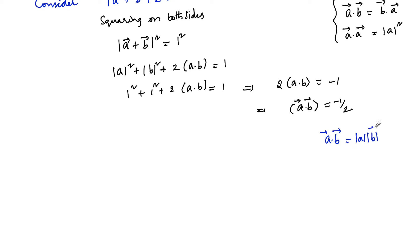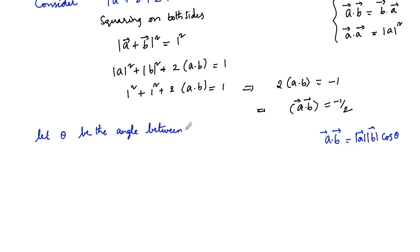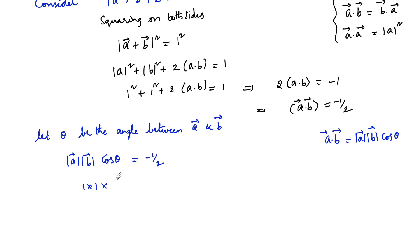Now, a dot b is equal to mod a times mod b times cos of the angle between the two vectors. Let theta be the angle between vectors a and b. So we have mod a times mod b times cos theta equal to negative 1 by 2. Since mod a and mod b are both 1, we get cos theta equal to minus 1 by 2.